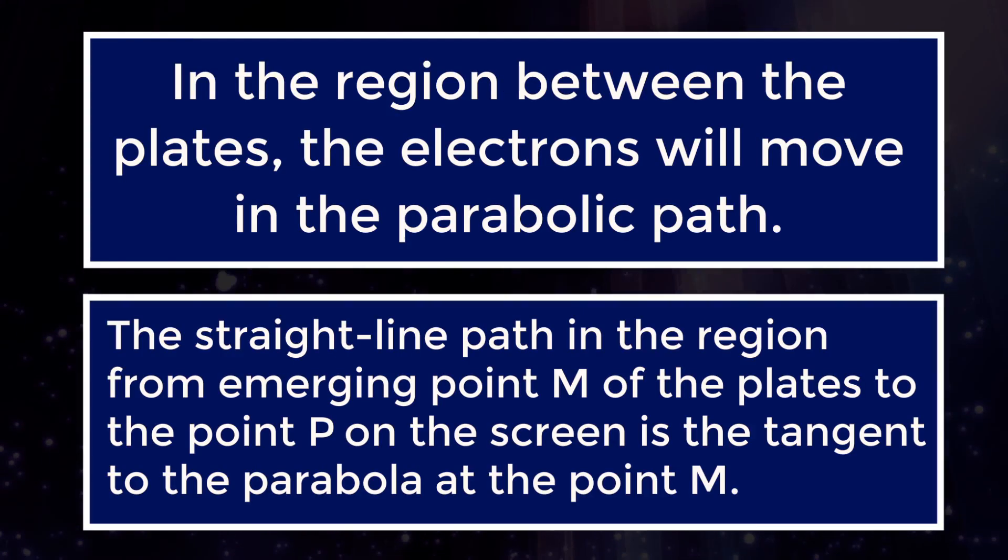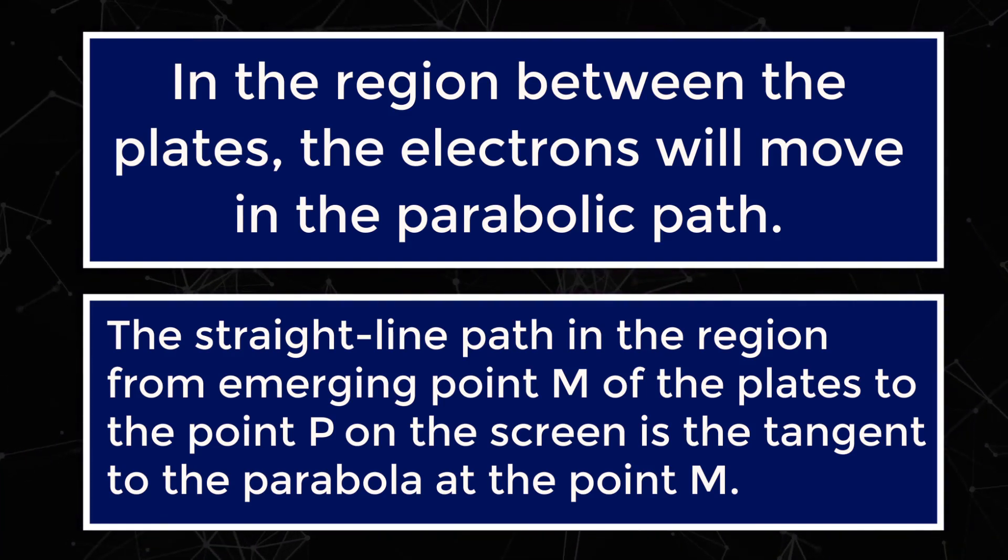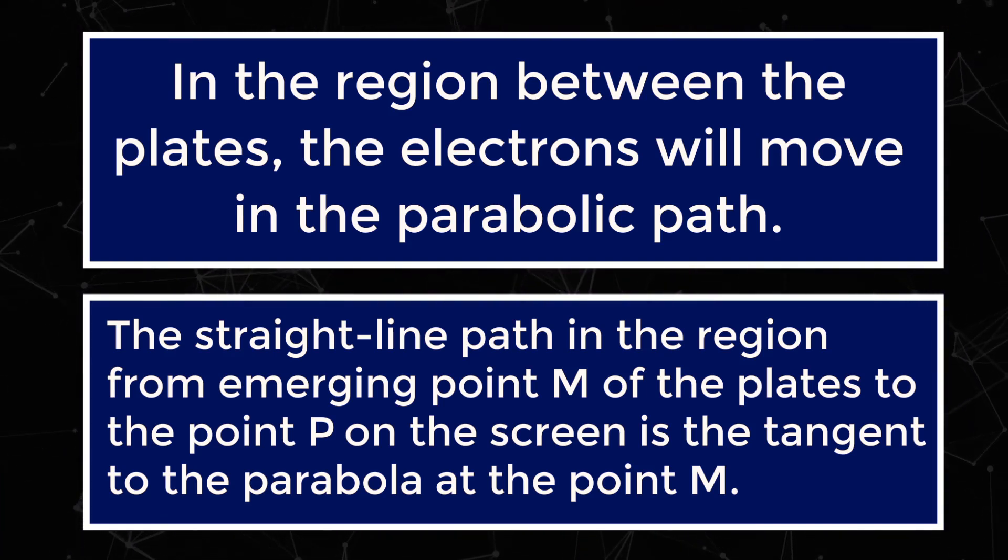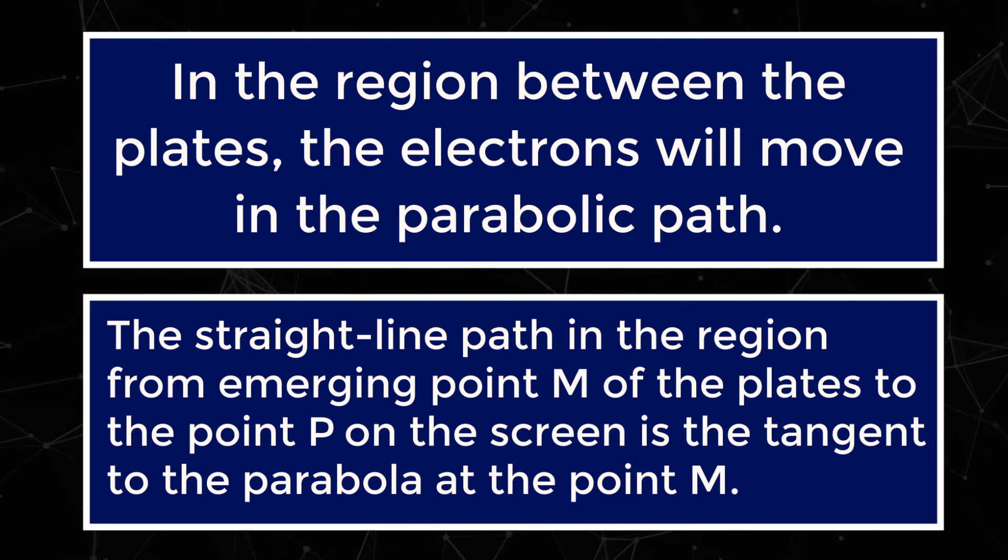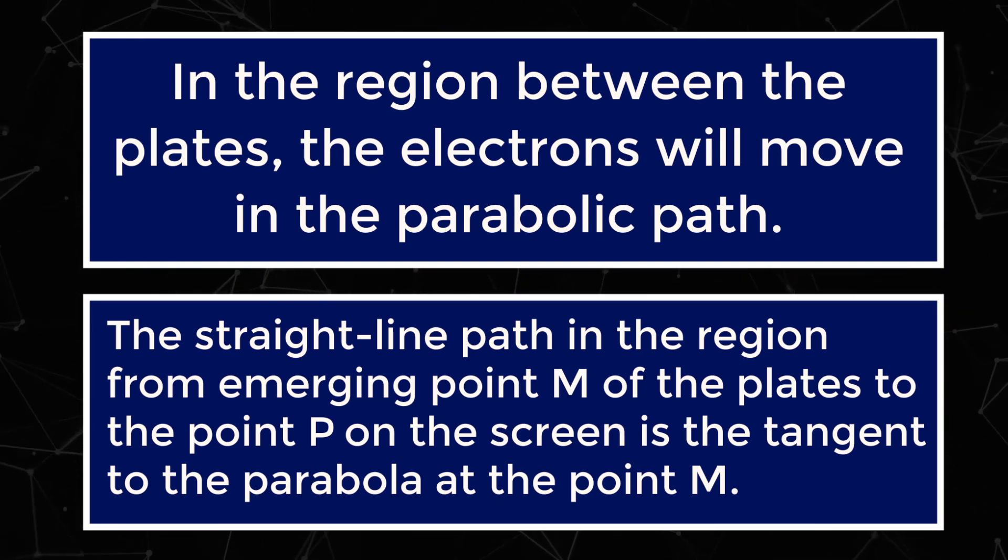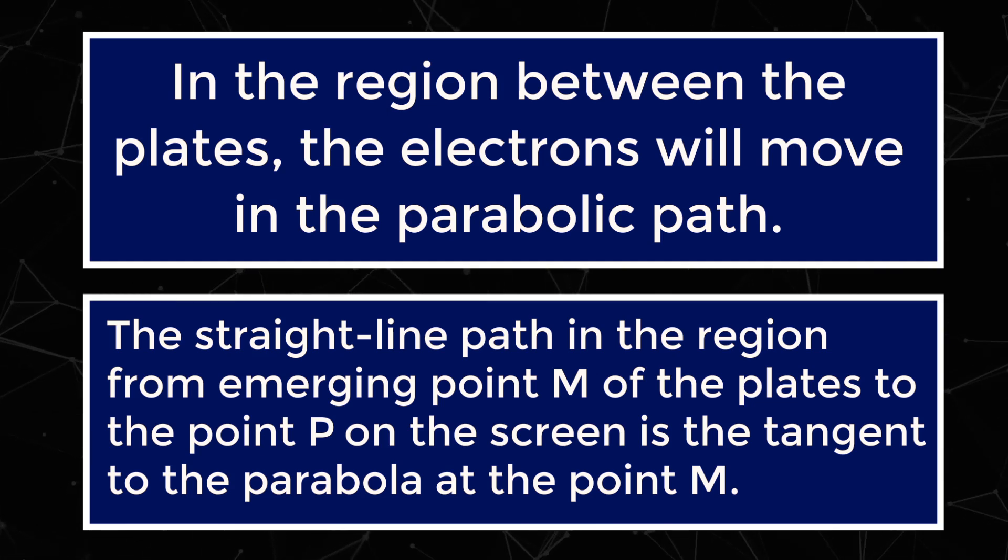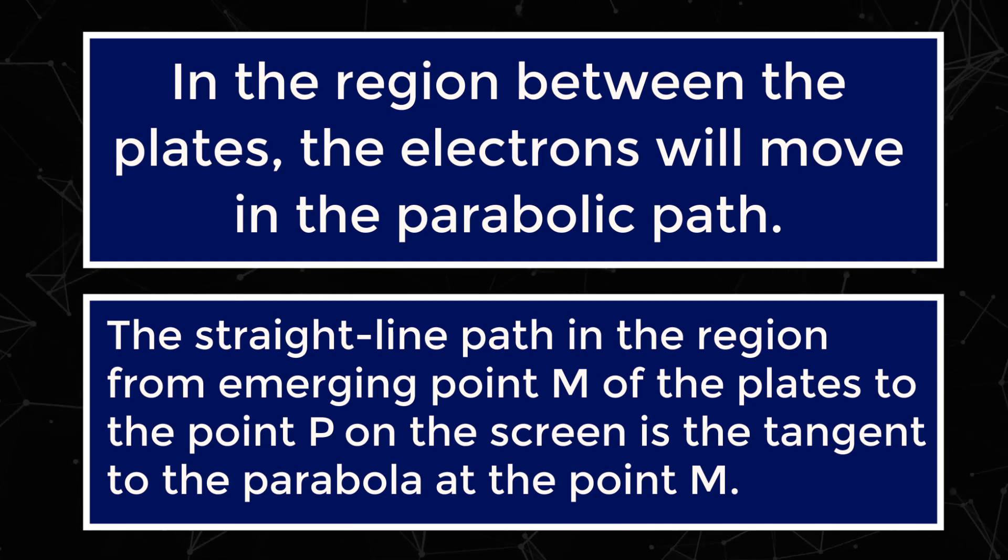In the region between the plates the electrons will move in the parabolic path. The straight line path in the region from emerging point M of the plates to the point P on the screen is the tangent to the parabola at the point M.